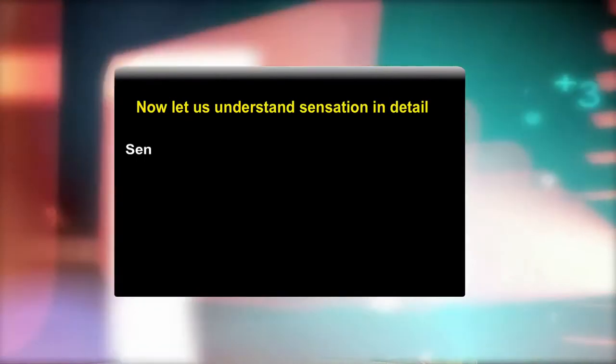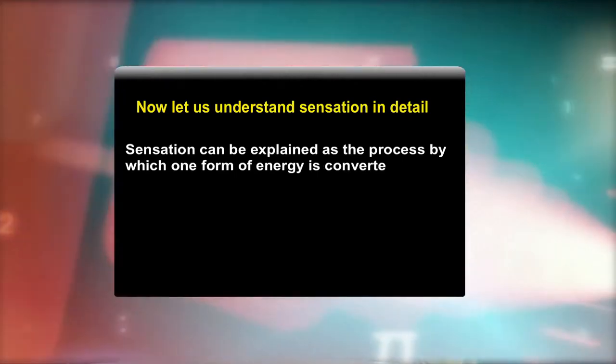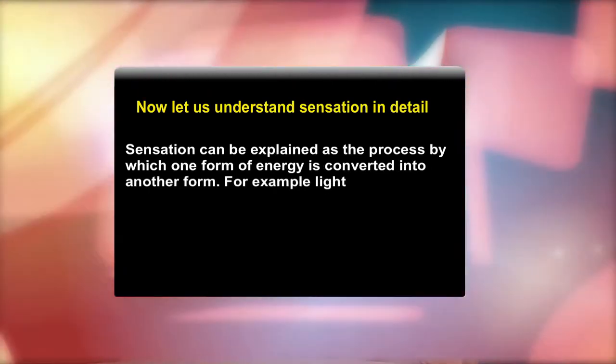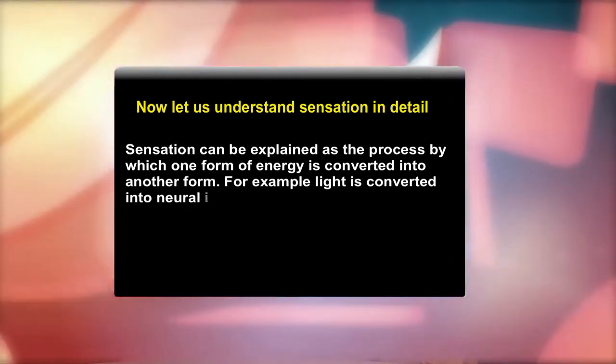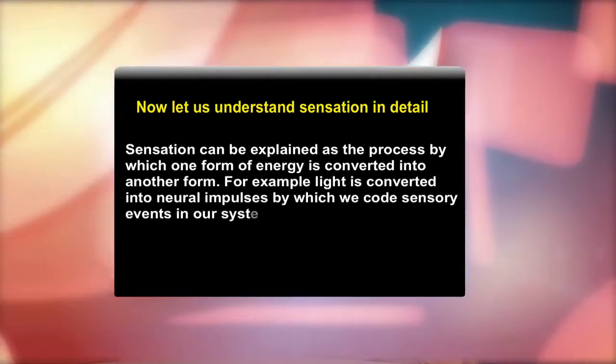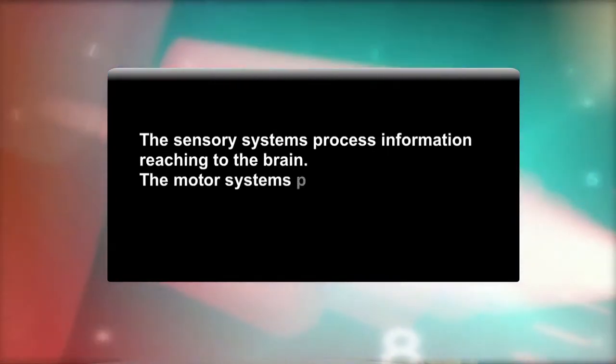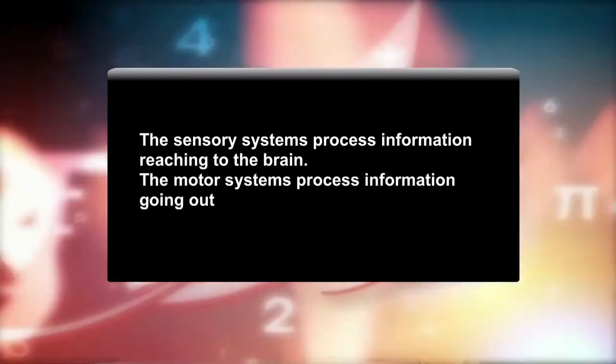Now let us learn sensation in detail. Sensation can be explained as the process by which one form of energy is converted into another form. For example, light is converted into neural impulses by which we code sensory events in our system that can be processed by our brain. The sensory systems process information reaching to the brain, while the motor systems process information going out of the brain to muscles and glands.